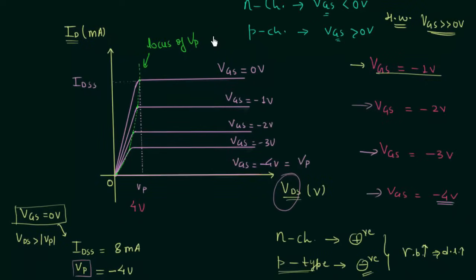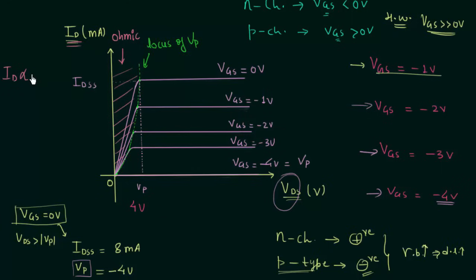The region to the left of the locus of pinch-off voltages is called the ohmic region, because in this region ID and VDS have a linear relationship — ID is directly proportional to VDS. This satisfies Ohm's law, so the JFET is acting as a linear device in this region.